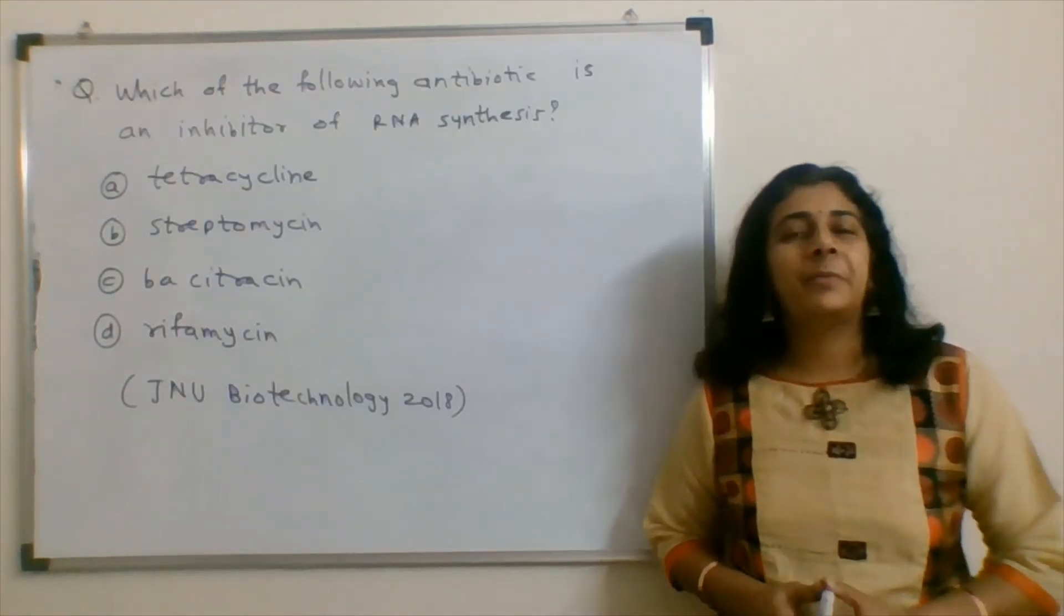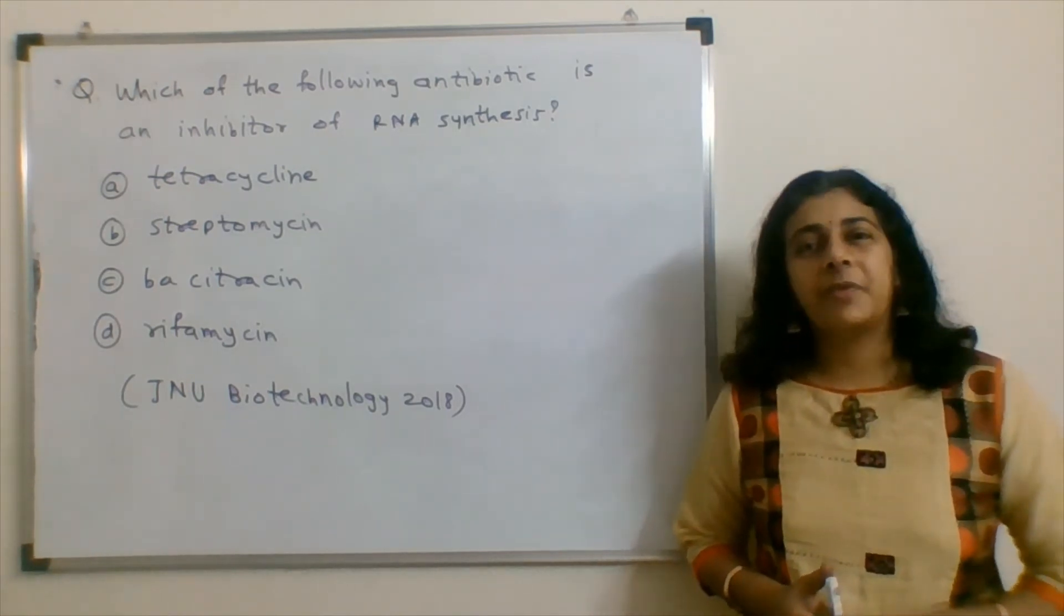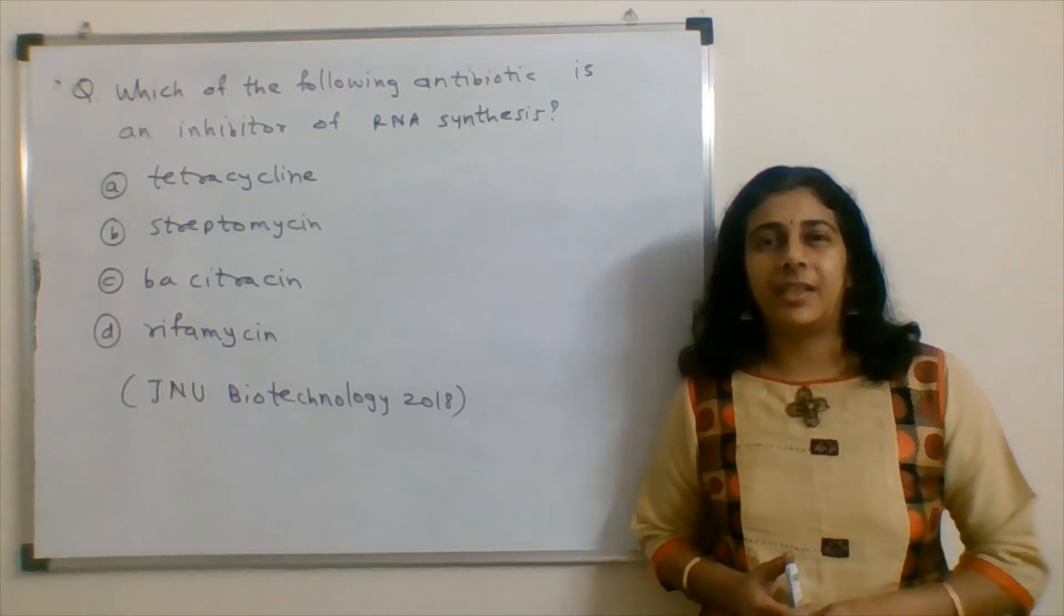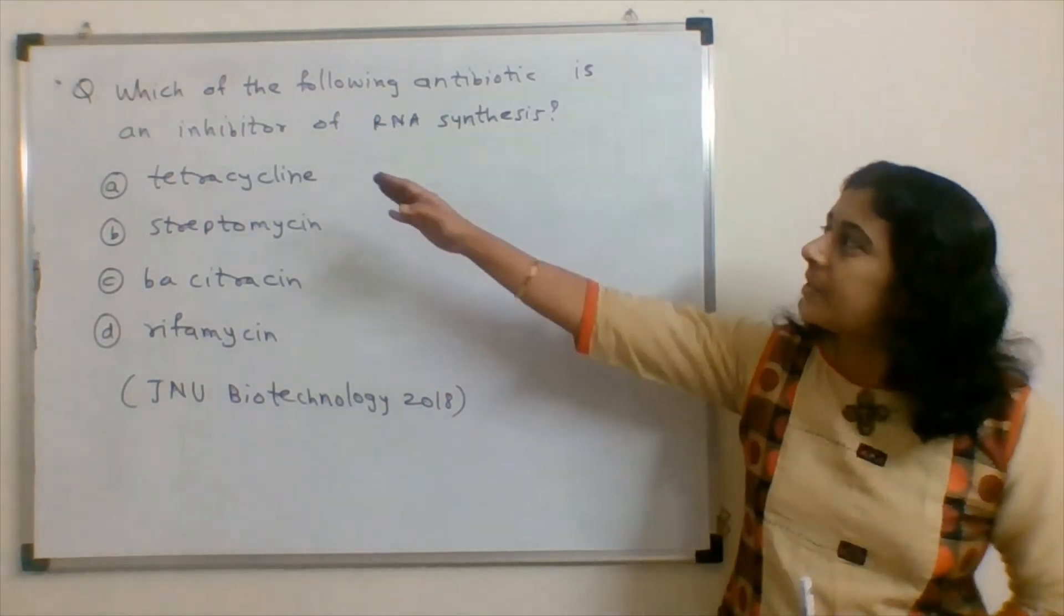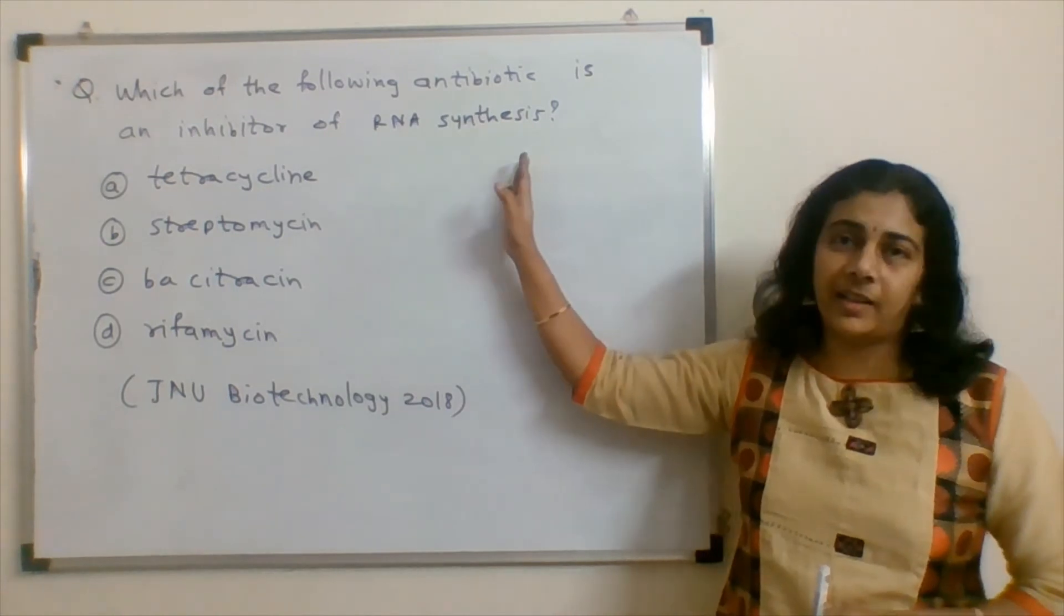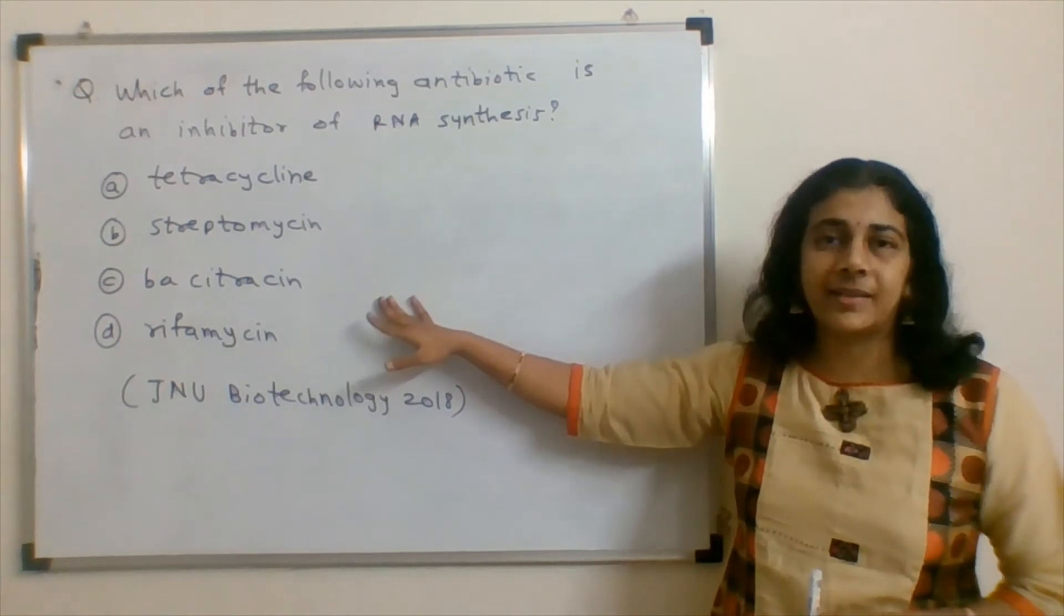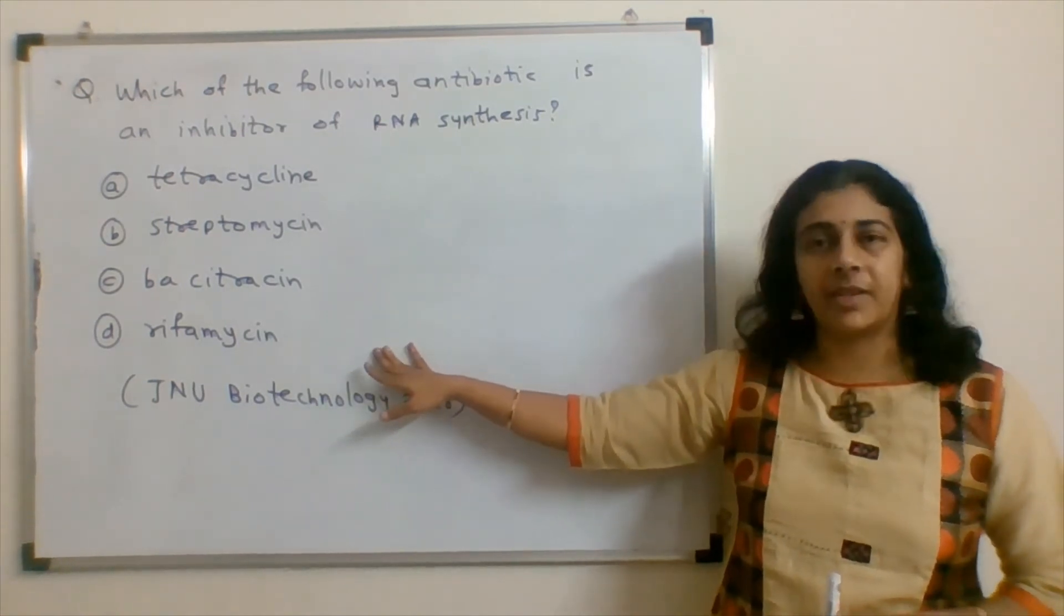Now, it is time to have a question for my next video. The question is from JNU entrance for Biotechnology 2018. Which of the following antibiotic is an inhibitor of RNA synthesis? Tetracycline, Streptomycin, Bacitracin or Rifamycin?